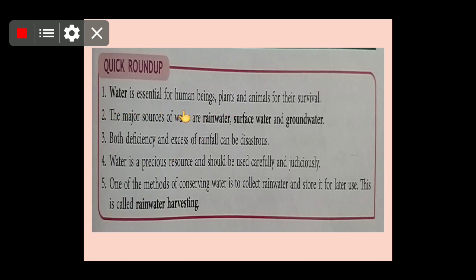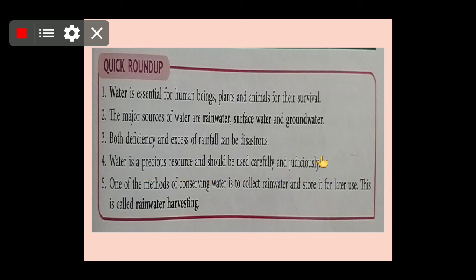To summarize: water is essential for all human beings. The major sources of water are rainwater, surface water, and groundwater. Both deficiency and excess of rainfall can be disastrous — deficiency leads to drought and excess leads to floods, and both cause great difficulties. Water is a precious resource which should be carefully and judiciously used. One of the methods of conserving water is to collect rainwater and store it for later use — this is called rainwater harvesting.